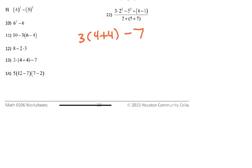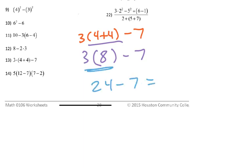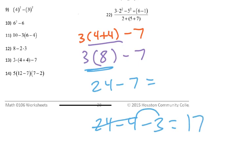Number thirteen: PEMDAS says parentheses first, so 4 plus 4 is 8. We have 3 times 8 minus 7. Multiplication comes next: 3 times 8 is 24. Then 24 minus 7: I split 7 into 4 plus 3, so 24 minus 4 is 20, and 20 minus 3 is 17. You don't have to do it that way — just showing different ways of thinking.